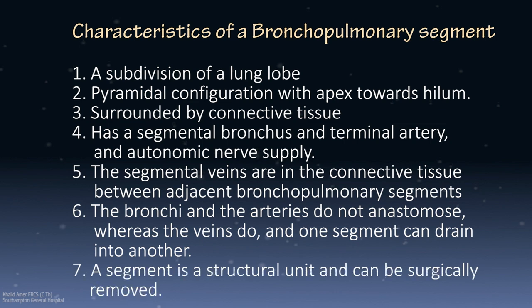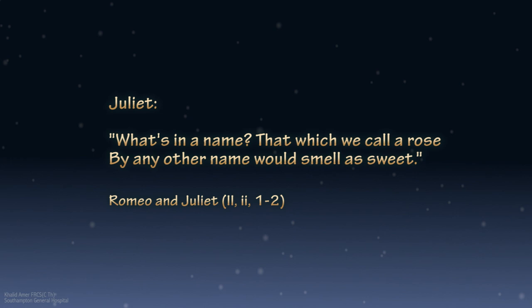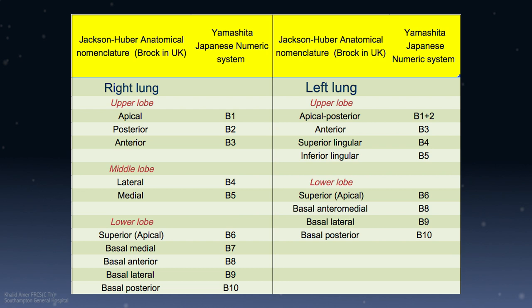A segment is a structural unit and can be surgically removed. In 1949, the International Congress of Otolaryngology met in London to discuss the nomenclature of bronchopulmonary segments. The Jackson-Huber classification was suggested but not finalized. Lord Russell Brock in 1950 was the reporter of the efforts of the Thoracic Society of Great Britain, which standardized the nomenclature as we know it today in the United Kingdom.